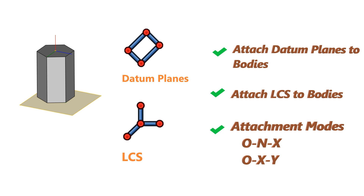What is meant by fully defining? Define datum planes or LCS with XYZ coordinates in a definitive direction without any ambiguity. There are several ways you could do this — attaching to faces, vertices, and edges. The O and X, or O, X, Y attachment modes are not all that intuitive for a beginner, and this tutorial will help in understanding these attachment methods.